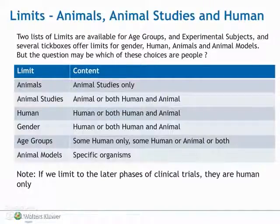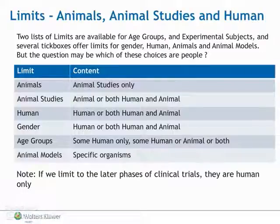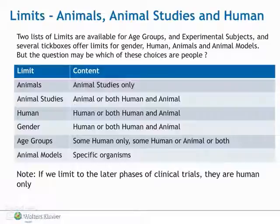Two lists of limits are available for age groups and experimental subjects, and several tick boxes offer limits for gender, human, animals, and animal models. The question may be which of these choices are about people. If we limit to the later phases of clinical trials, these are human-only. But there is no easy way to remove studies which are not only about people but also discuss animals or their tissues to some extent.